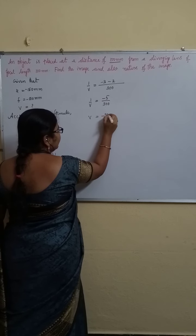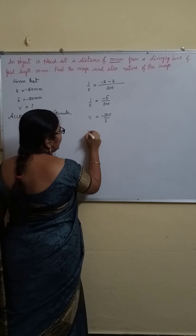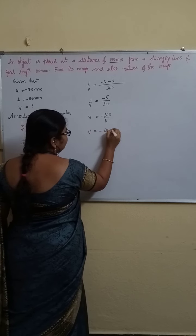V value is minus 300 by 5. How much is it? Minus 16 cm.